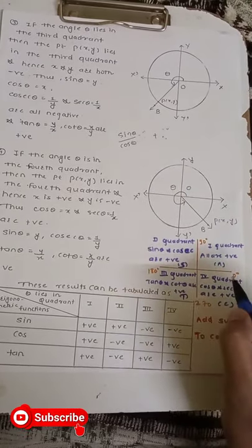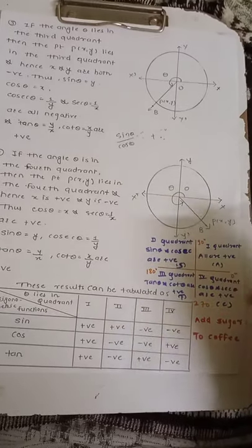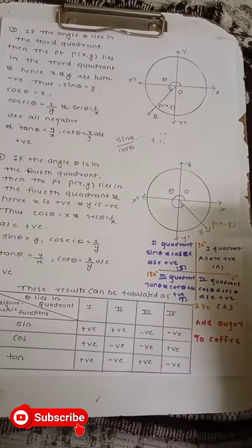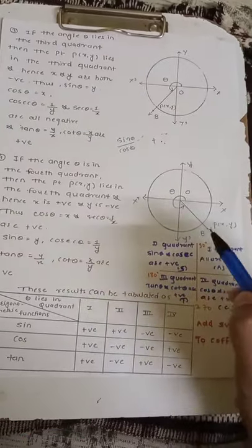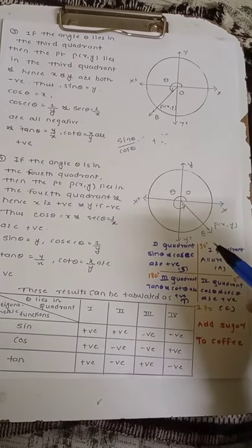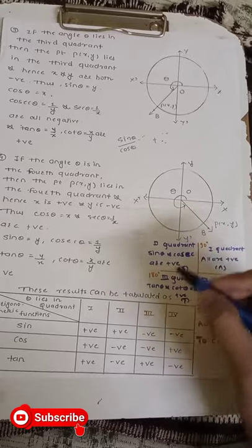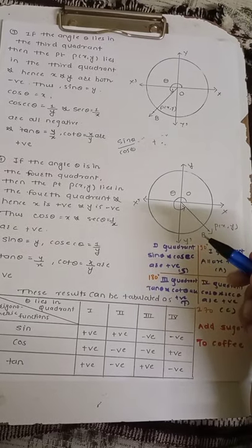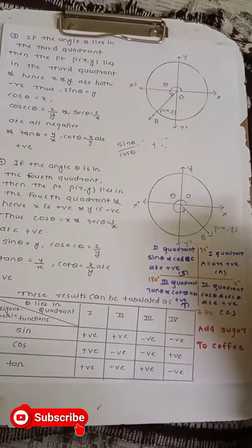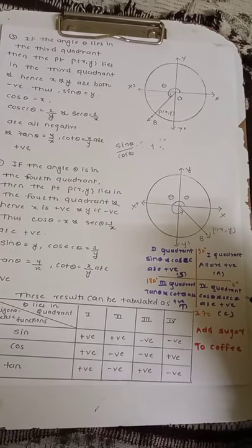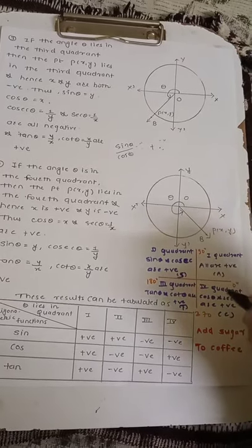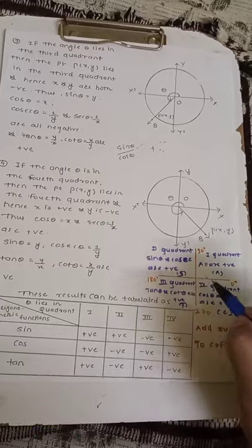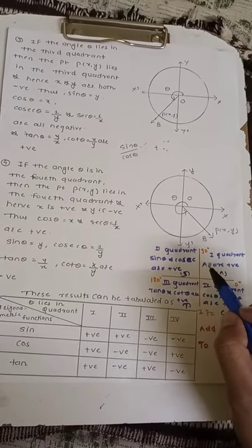We can remember the signs of trigonometric functions using the mnemonic 'Add Sugar To Coffee.' 'Add' means all trigonometric functions are positive in the first quadrant. 'Sugar' means sin θ and cosec θ are positive in the second quadrant. 'To' means tan θ and cot θ are positive in the third quadrant. 'Coffee' means cos θ and sec θ are positive in the fourth quadrant. In this way, we remember the signs of the trigonometric functions.